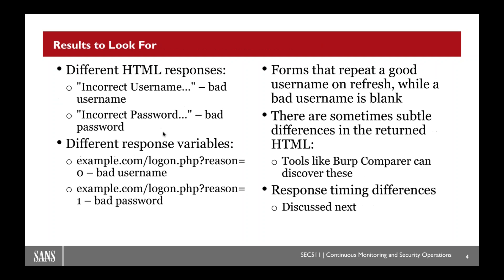When looking for the system to signal good versus bad username, sometimes it'll say 'no such username.' Sometimes there'll be a subtle difference in the response — a code difference that Burp Comparer can show. We can compare versus a known bad user like ASDF as our baseline. Burp can automate detecting subtle differences in size and error codes. A common one is: a bad username returns a blank form, but a good username with a bad password returns with the username filled in.